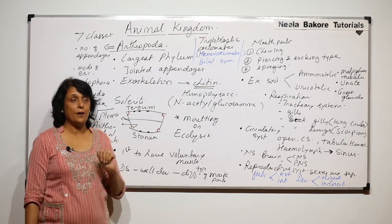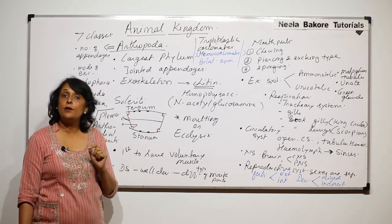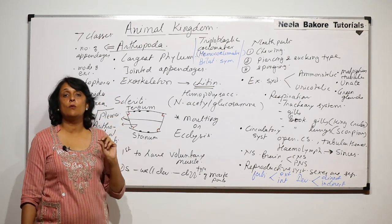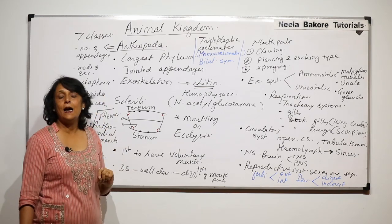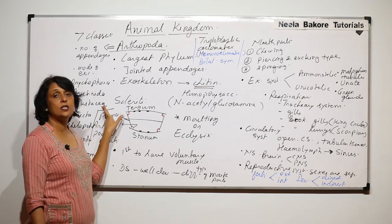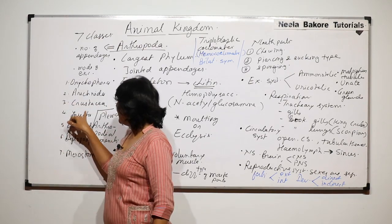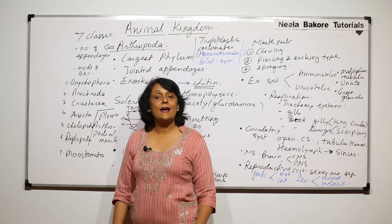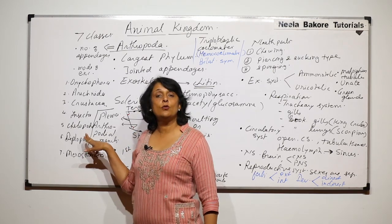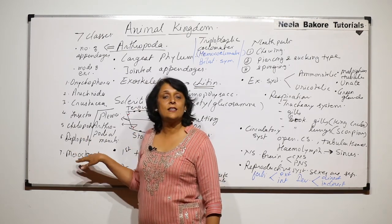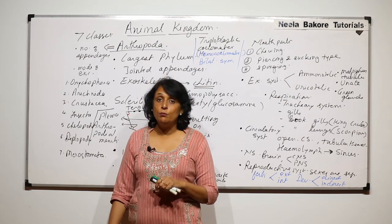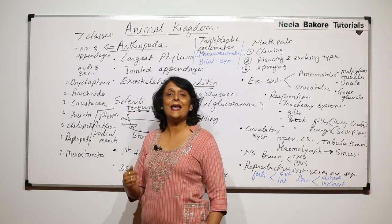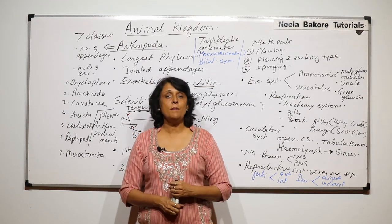Key examples for each class: Onychophora includes Peripatus, the walking worm; Arachnida includes spiders; Crustacea includes prawns; Insecta includes cockroaches and house flies; Chilopoda includes centipedes; Diplopoda includes millipedes; and Merostomata includes the king crab or Limulus. At least one example per class and their special features will be covered starting from the next video.